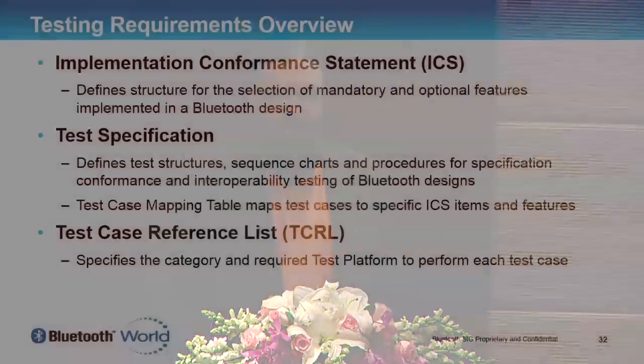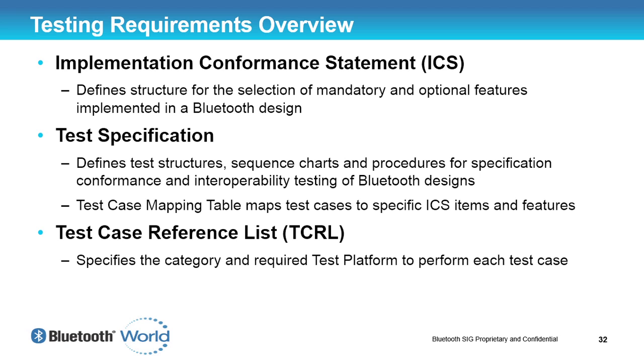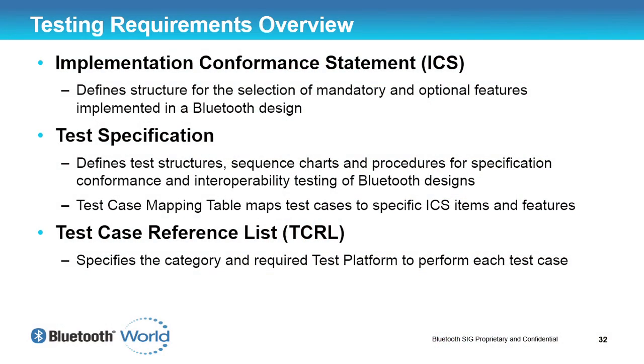One of the key parts of this is something called an Implementation Conformance Statement, or ICS. An ICS basically says: in my implementation, I am building this functionality — I do X, I do Y, I do Z. By doing that, you can then determine what tests you need to run based on something called a Test Case Mapping Table. The test specifications define the test structures, sequence charts, and procedures you need to check conformance and interoperability of your Bluetooth design.